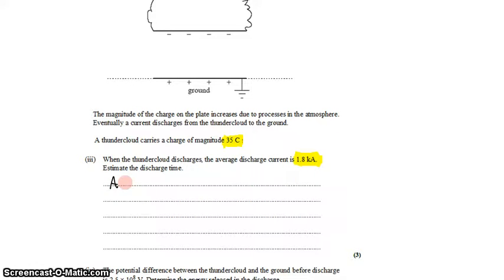Amps are coulombs per second. So if we have 35 coulombs, we divide by the rate of discharge, 1.8 coulombs per second, and that'll give us the time.